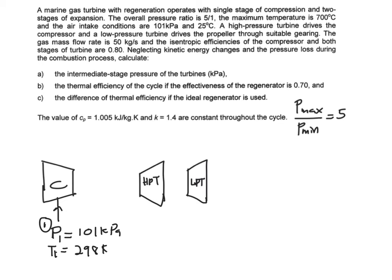And then it says that the maximum temperature is 700 degrees C. Meaning that going out from your compressor, it goes into your combustion chamber and goes into your high pressure turbine. So in this combustion chamber, when the fuel and air is fully combusted, so you are going to have the highest temperature.